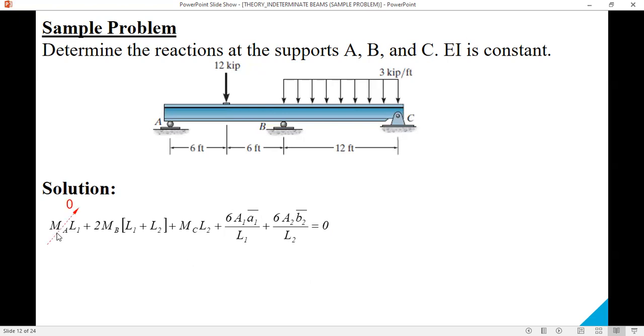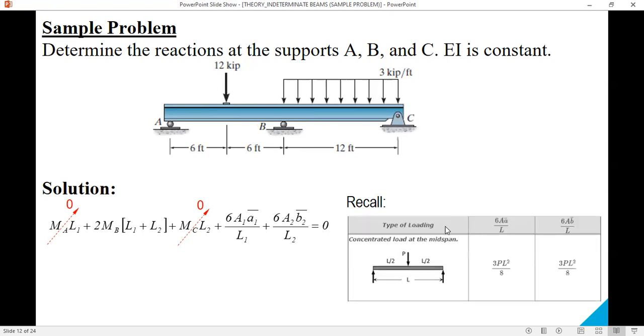MA is zero, MC is also zero. This term is for the left span, and for the left span the load is acting at the mid span, so there is a formula for that. And this one is for the right span uniformly distributed, there is also a formula for that. Let us recall: for a concentrated load acting at the mid span, the value of 6AA over L is 3PL squared over 8, and the value is 648.